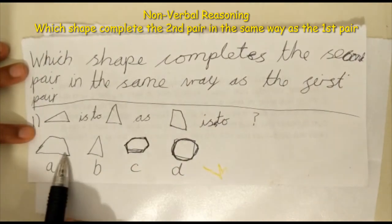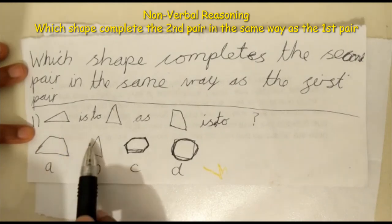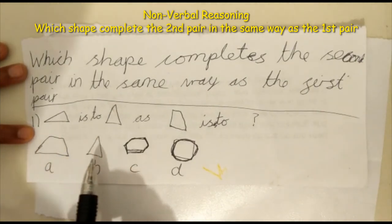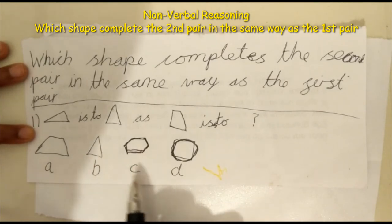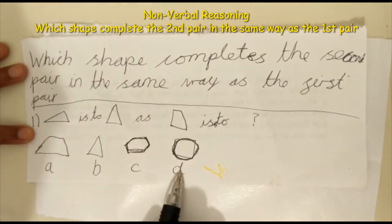So option A, we have a shape with four sides. Option B, we have a shape with three sides. Option C, we have a shape with six sides. And option D, we have a circle with no sides.